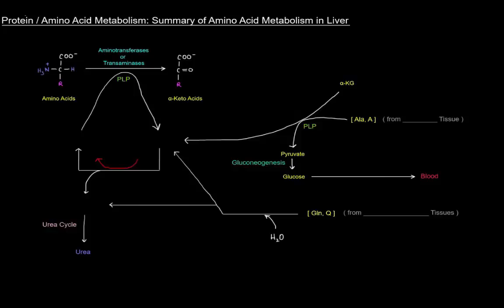That happens via transamination, catalyzed by aminotransferases. That requires starting with alpha-ketoglutarate — the amino group ends up being attached to alpha-ketoglutarate and collecting on glutamate. Once we have these alpha-keto acids, we can oxidize them for energy.